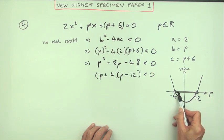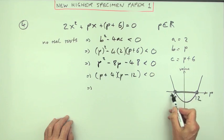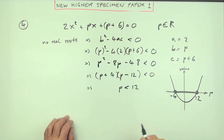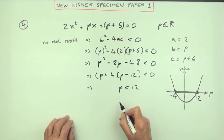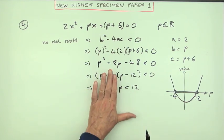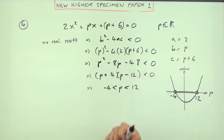That was the third mark. The fourth mark comes from stating that interval: p has to be less than 12, and p is greater than -4. You can slip them together because that reads as p is less than 12 and p is greater than -4, reading the sign from the p.